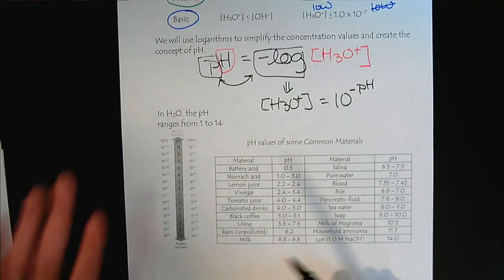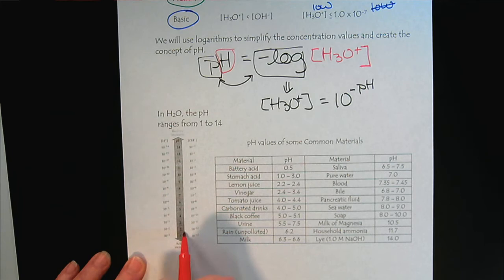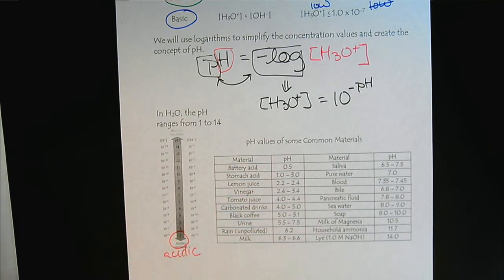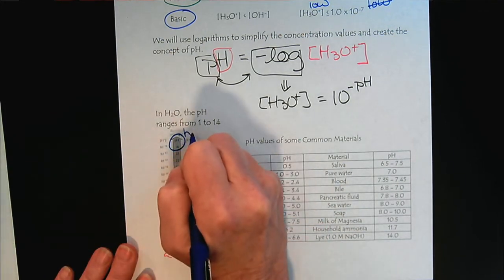So the important thing to think about here is it is a log scale. So when we have a low pH, that's going to be acidic. And when we have a high pH, that's basic.